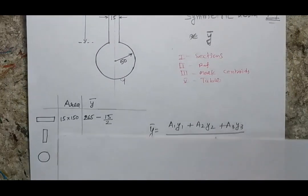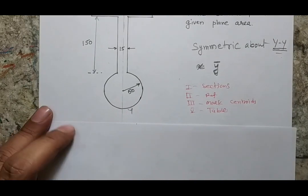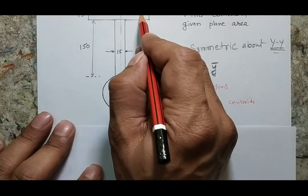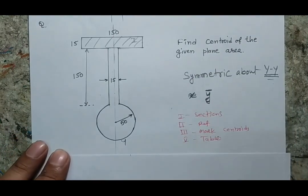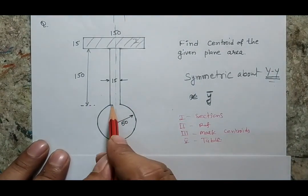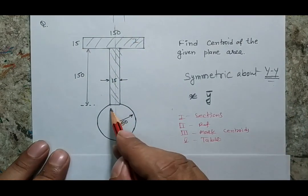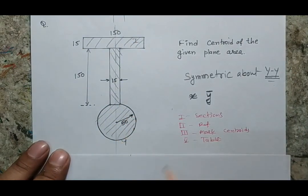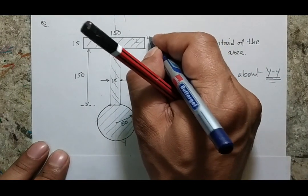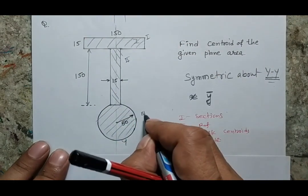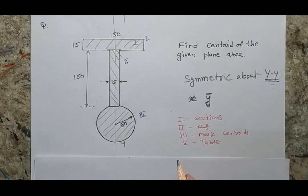There are three sections here. Section 1 is the top side body, Section 2 is the middle rectangular part, and Section 3 is the circle. That completes my first job of identifying the three sections. My second job is to make the references.